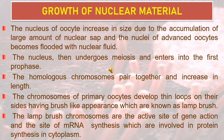The nuclei of advanced oocytes become flooded with nuclear fluids. The nucleus then undergoes meiosis and enters the first meiotic prophase. The homologous chromosomes pair together and increase in length. The chromosomes of the primary oocyte develop thin loops on their sides having a brush-like appearance, known as lampbrush chromosomes. These lampbrush chromosomes are the active site of gene action and the site of mRNA synthesis, which are involved in protein synthesis in the cytoplasm.